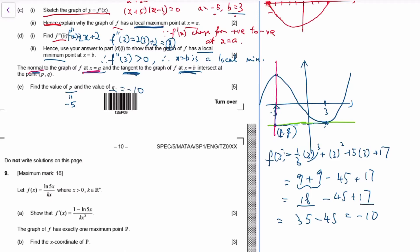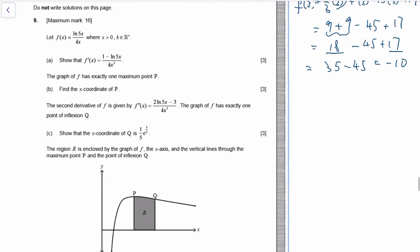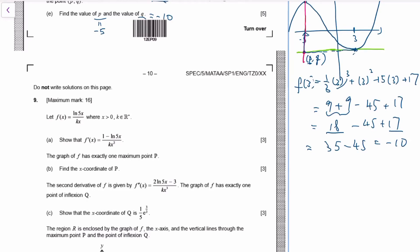They share the same y-coordinate. The last question is again a differentiation problem involving a second derivative, maximum, and minimum. We have a function of the form ln(5x)/(kx), so we use the quotient rule. Let u = ln(5x) and v = kx, and the formula is (v·du/dx − u·dv/dx) / v².